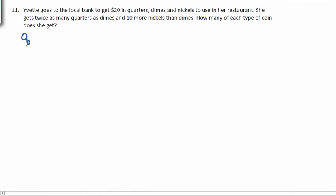Well, first, she gets quarters, dimes, and nickels. We get twice as many quarters as dimes. So twice means two times, so two times D. Ten more nickels than dimes. More means add, so we'll do ten plus the number of dimes.